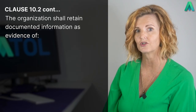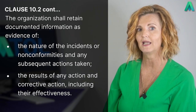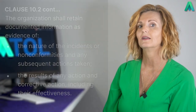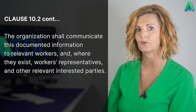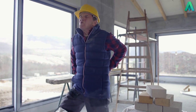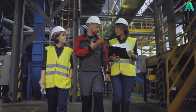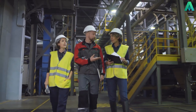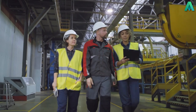The final section of this clause states that the organisation shall retain documented information as evidence of the nature of the incidents or non-conformities and any subsequent actions taken, the results of any action and corrective action including their effectiveness, and the organisation shall communicate this documented information to relevant workers and, where they exist, workers' representatives and other relevant interested parties. Simply put, any incidents and non-conformities identified need to be recorded as to what they were and what actions were taken, including the results — successful or otherwise — of the corrective action. This is normally in the form of an incident report, incident register, non-conformance report and non-conformance register, which you can combine as long as it records this information at a minimum.